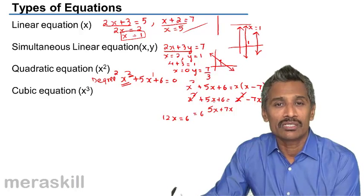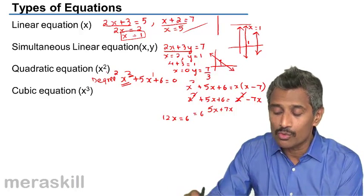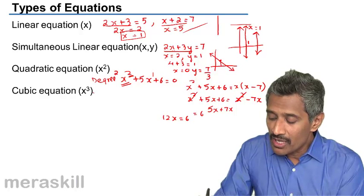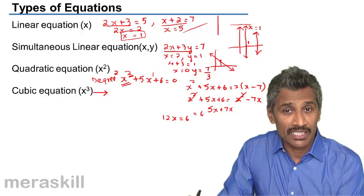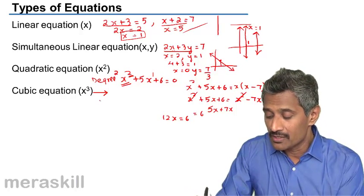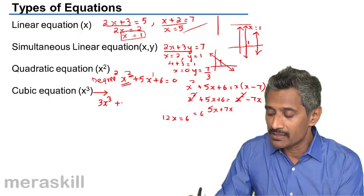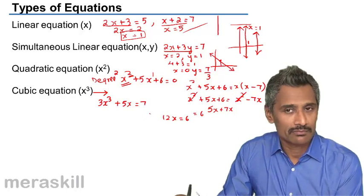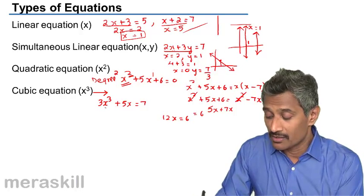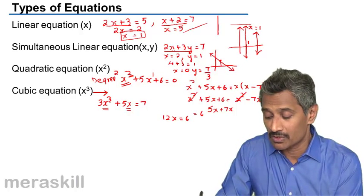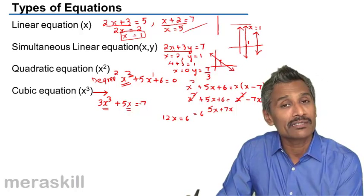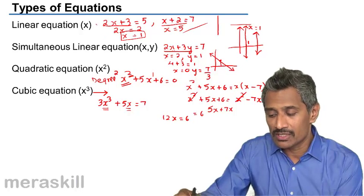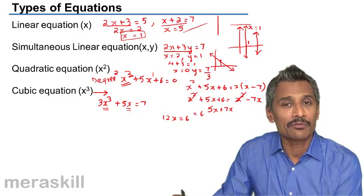Then you have a cubic equation, where the variable is raised to power 3. For example, 3x cubed plus 5x equals 7. The maximum power to which the variable has been raised — the degree of this equation — is 3. So 3x cubed plus 5x equals 7 is a cubic equation. This covers the various types of equations.